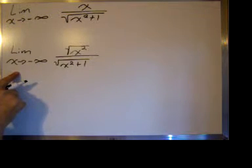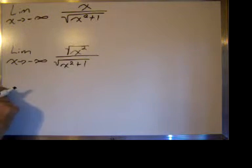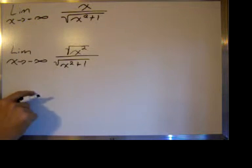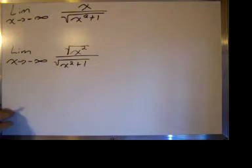As x goes to negative infinity, the square root of x squared is positive, but as x goes to negative infinity, x is negative. So in order to compensate for that, we just put a negative one. Now, we have not changed anything about the expression. It maintains its value.